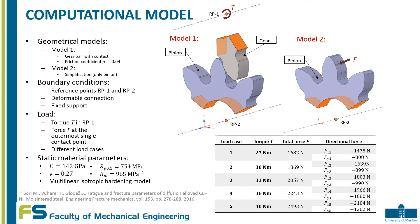The boundary conditions on models 1 and 2 were defined as reference points RP1 and RP2, which deformably connect the inner cylinder of the gear and the side cut surfaces as shown in the figures in orange. In RP2 there is fixed support in all directions of the coordinate system. In RP1, only rotation around the gear's axis is free.